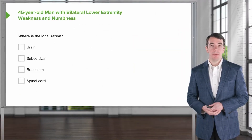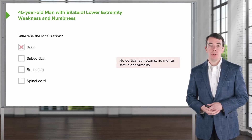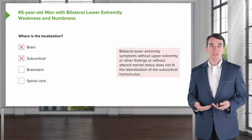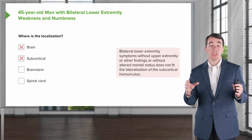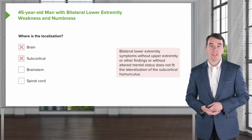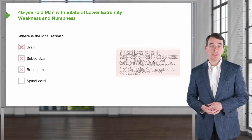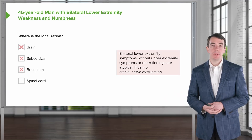So what's the localization? Is it in the brain, the subcortex, brainstem, or spinal cord? This isn't the presentation of a brain disorder — there are no cortical symptoms and no abnormality in mental status. There's also nothing pointing to the subcortex: the symptoms involve both legs, and the motor and sensory fibers for both legs are on opposite hemispheres — it would take a very large lesion to affect both, and we'd surely see problems with mentation. We also don't see crossed findings or cranial nerve dysfunction pointing to the brainstem. This is the classic presentation of a myelopathy: a paraparesis, upper motor neuron reflexes, and the presence of a sensory level would seal the deal on a myelopathic process.